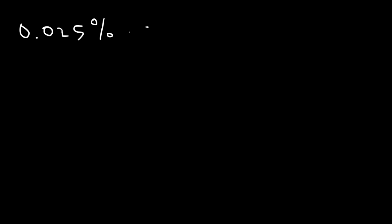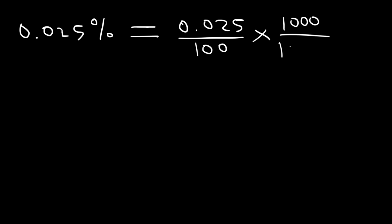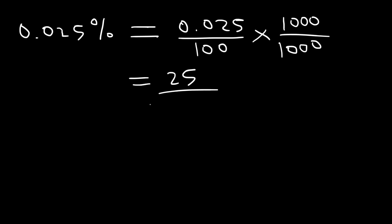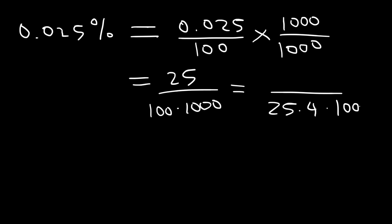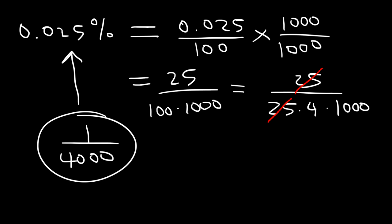Here's another example: convert 0.025% into a fraction. First, let's write it over 100, so this is 0.025 divided by 100. In order to turn 0.025 into a whole number, we need to multiply the top and the bottom by 1,000, because the last digit is in the thousandths place. 0.025 times 1,000 — just move the decimal 3 units to the right — gives 25. On the bottom, I'll rewrite it as 100 times 1,000. Now, 100 can be written as 25 times 4; we can cancel the 25. 1,000 times 4 is 4,000, so the final answer is 1 over 4,000, which equates to 0.025%.